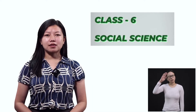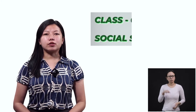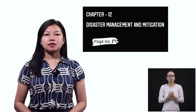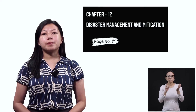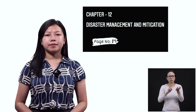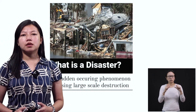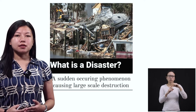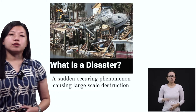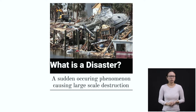Hello students of class 6. This is social science and today our topic is disaster management and mitigation from chapter 12, page number 89. So today we are going to learn about disasters. First, you need to know what a disaster is. A disaster is a sudden occurring phenomenon causing large-scale destruction.